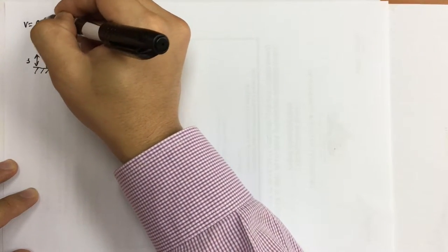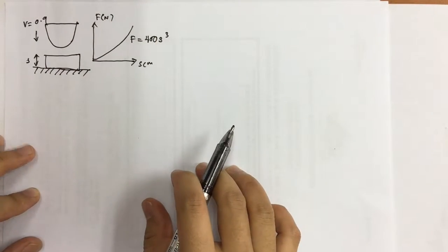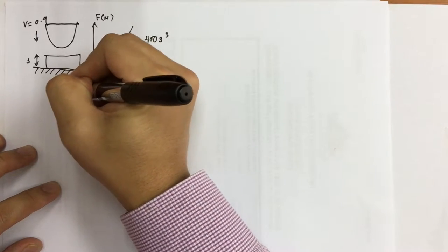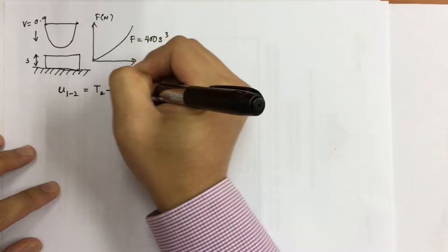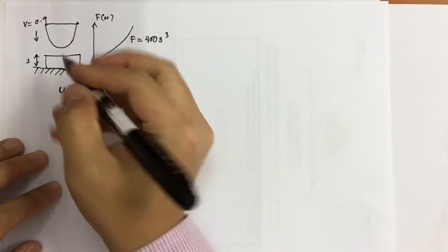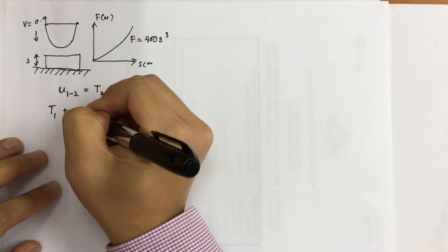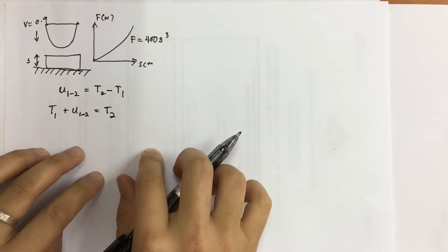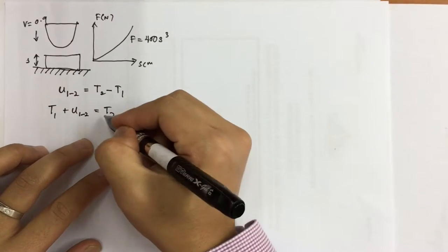Now you have the principle of work and energy. So you have work from one to two equals to the final kinetic energy minus the first kinetic energy. So you are going to get T1 plus U1 to 2 equals to T2. It says that the boat is going to stop, which means that the final energy will equal zero.